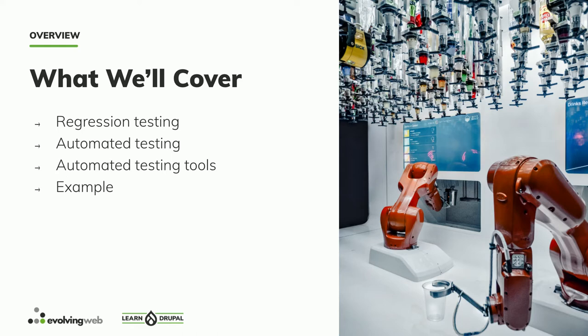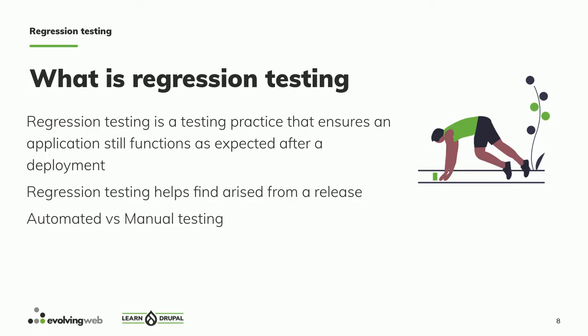So today we're going to talk about regression testing. One of the problems when we work with a Drupal project is that when we do a security update or core update, we don't know if it breaks something somewhere. That's where regression testing comes in. It's a testing practice to ensure that your application, after you deploy or change something, doesn't break elsewhere. There are two types of regression testing: automated testing and manual testing.